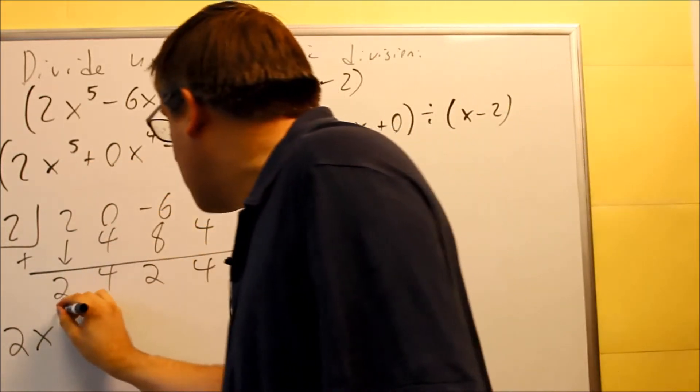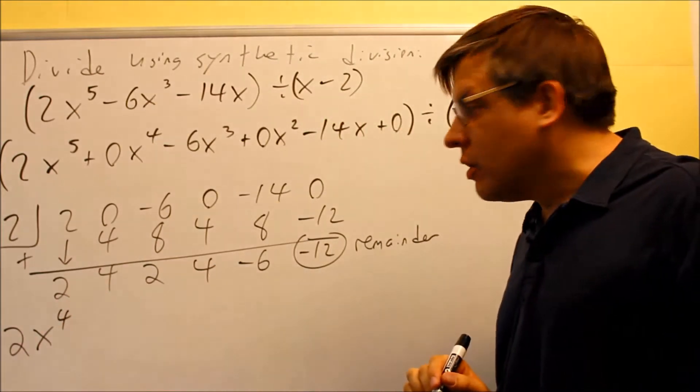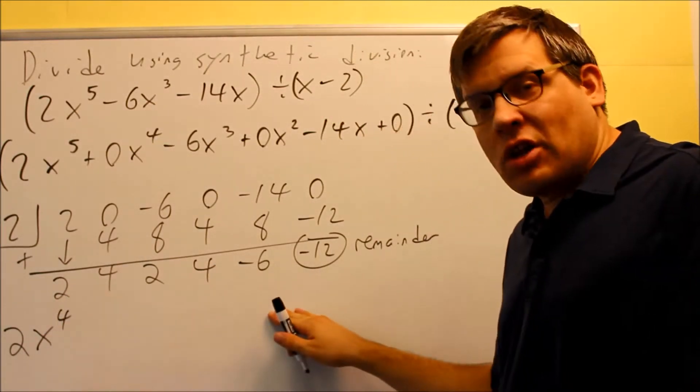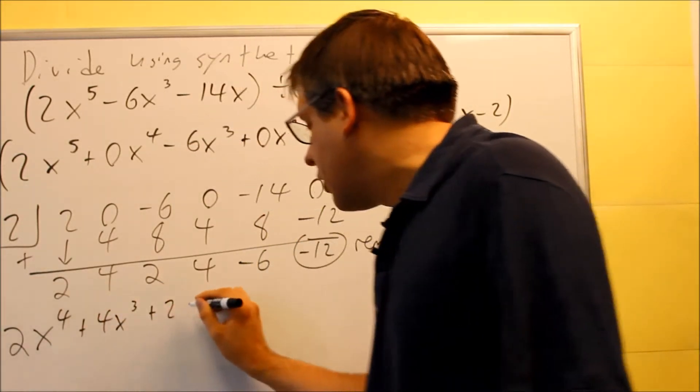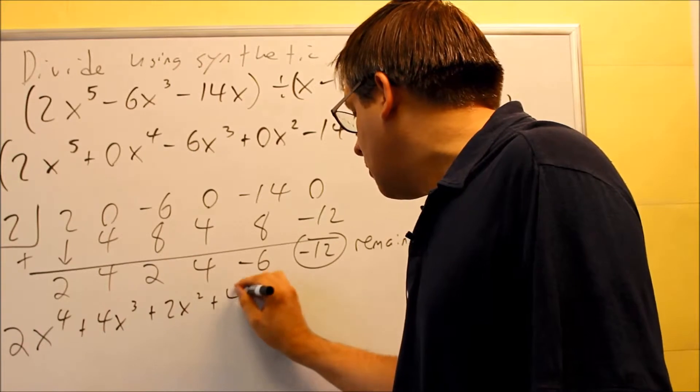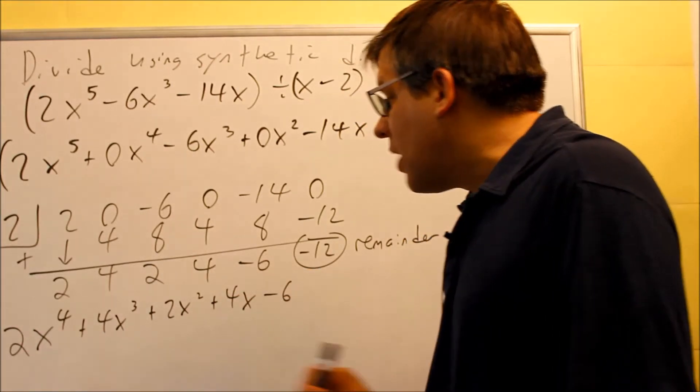We're going to make it a 4th power. Then the rest of them, you just do descending powers all the way down from there. So I do plus 4x cubed plus 2x squared plus 4x minus 6. This whole thing here is going to be your quotient.